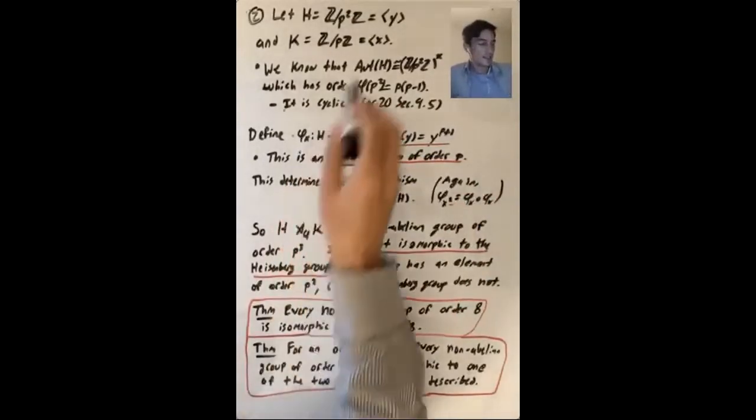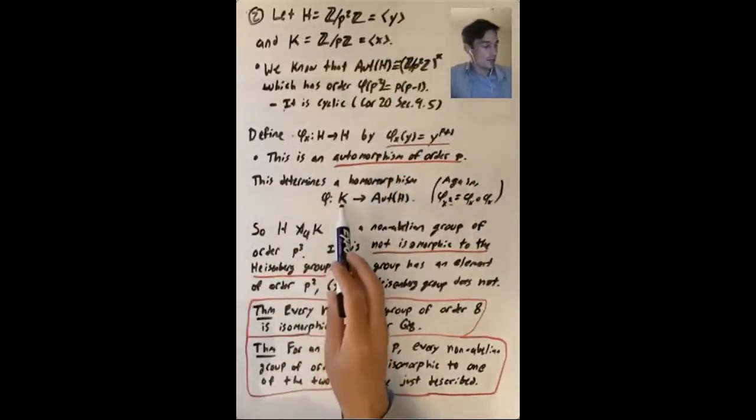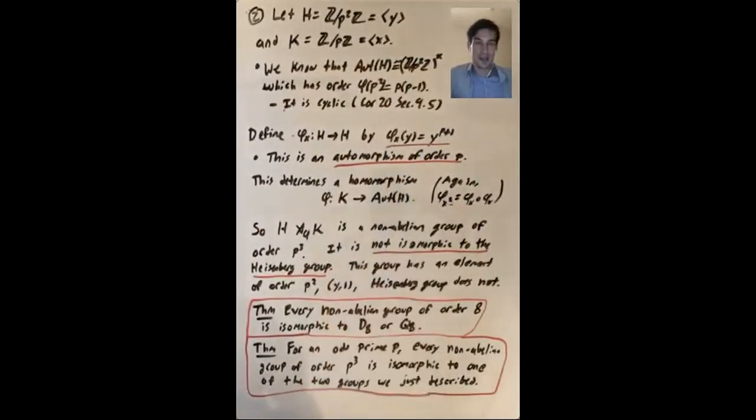So knowing what phi of x is, since x is a generator of K, this determines a homomorphism from K to aut H.